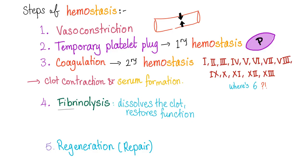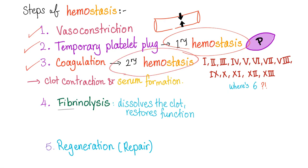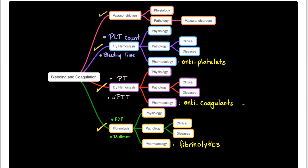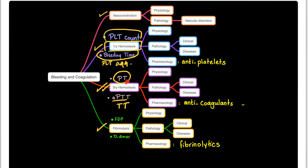Hemostasis is formation of a clot to decrease blood loss. Step one: vasoconstriction. Step two: temporary platelet plug — this is primary hemostasis. Step three: coagulation — this is secondary hemostasis. Then fibrinolysis, regeneration, and repair. To test primary hemostasis: platelet count, bleeding time, and platelet aggregometry. To test secondary hemostasis: PT, APTT, and TT. We can also measure serum fibrinogen level. Fibrinolysis is tested using fibrinogen degradation products, fibrin degradation products, and fibrin D-dimer.